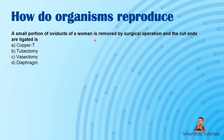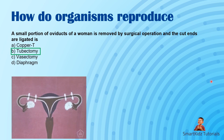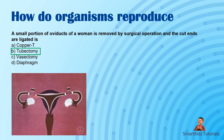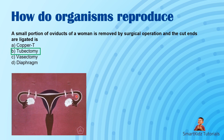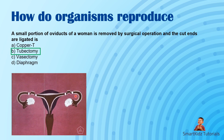A small portion of oviducts of a woman is removed by surgical operation and the cut ends are ligated — this is tubectomy. The diagram shows parts of the fallopian tubes where both ends are cut and stitched back, disrupting the clear pathway. The meeting of sperm and egg has to happen in the fallopian tube — that's where fertilization takes place — so blocking that passage prevents pregnancy.